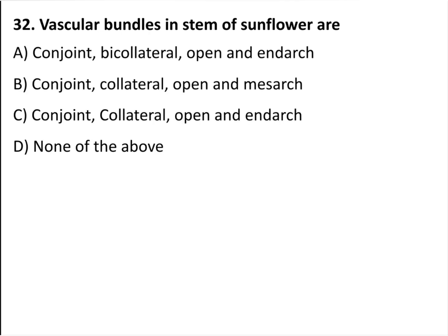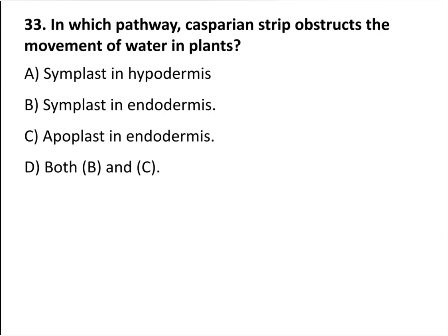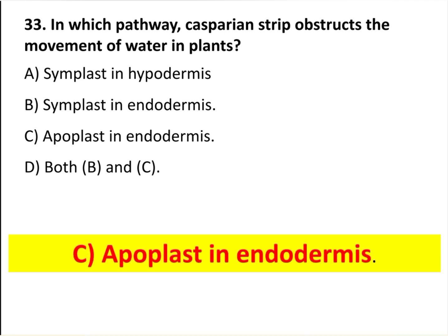Vascular bundles in the stem of sunflower are conjoint, collateral, open and endarch. In which pathway does the Casparian strip obstruct the movement of water in plants? The apoplastic pathway, at the endodermis.